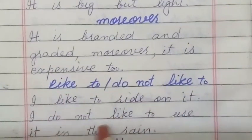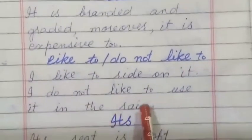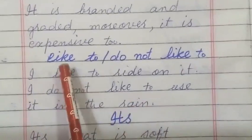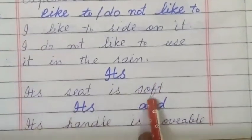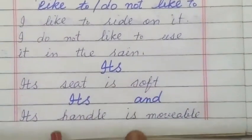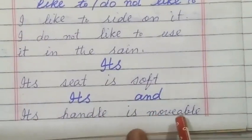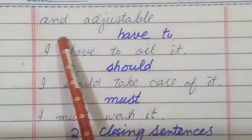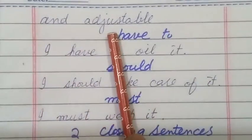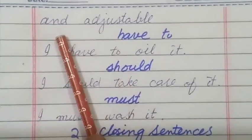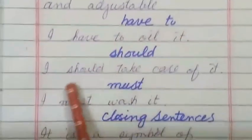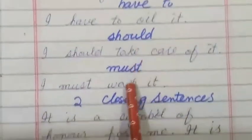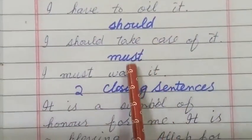'I like to ride on it. I do not like to use it in the rain' — use of 'like to' and 'do not like to.' 'Its seat is soft' — use of 'its.' 'Its handle is movable and adjustable' — use of 'its' with 'and.' 'I have to oil it' — use of 'have to.' 'I should take care of it' — use of 'should.' 'I must wash it' — use of 'must.'